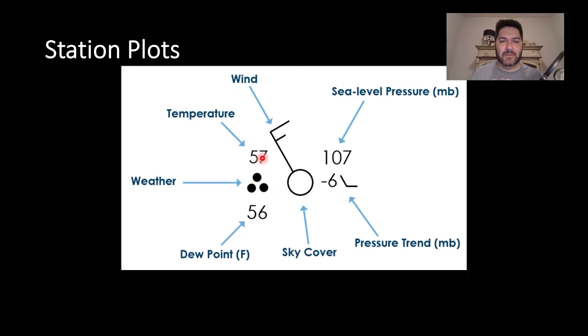This is interesting because it looks like the temperature here is 57, the dew point is 56. In meteorological jargon, you might say that's 57 over 56, 57 meaning the temperature, 56 meaning the dew point. So anytime you hear something over something else, it's temperature over dew point.